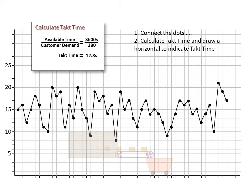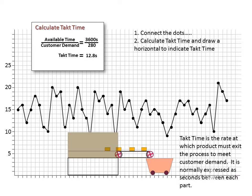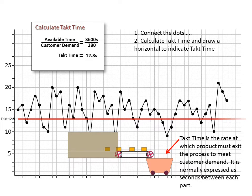Simply put, TAC time is the rate at which individual parts or service units must exit the process to meet customer demand. It is normally expressed as seconds between each part. Thus, a 12.8 second TAC time means that a part needs to exit the process, or a task needs to be completed every 12.8 seconds. This gives us the important goal that we can measure each process step by. We indicate the TAC time by drawing a solid red line across the graph. The data can then be compared to the red TAC time line.